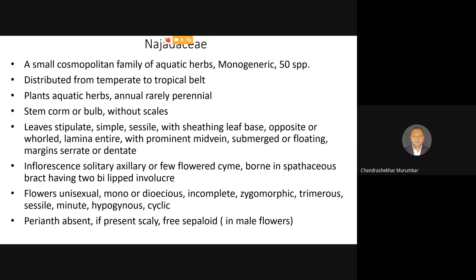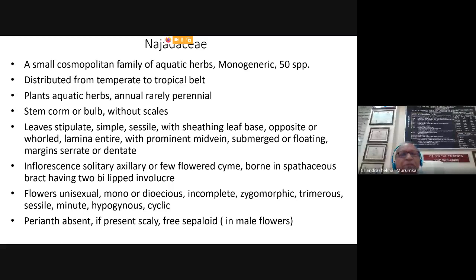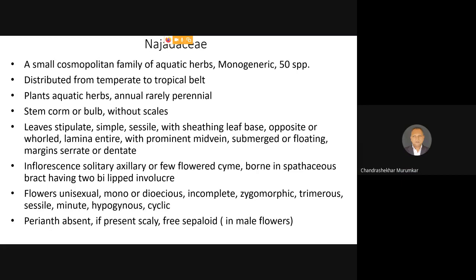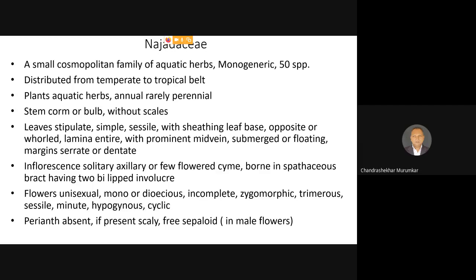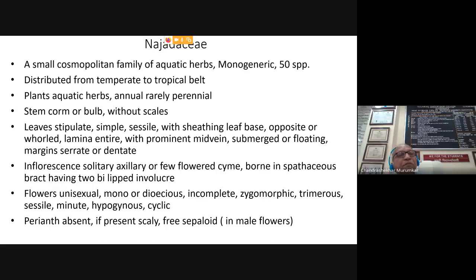Najas plants are aquatic herbs growing from seeds. The stem may show nodes and internodes, or very rarely in some species the stem may be present in the form of a bulb, making the plant perennial. Generally Najas is an annual aquatic freshwater herbaceous plant, though sometimes it may be perennial. The stem shows nodes and internodes or may show the presence of a corm or bulb at the base from which the aerial shoots emerge.